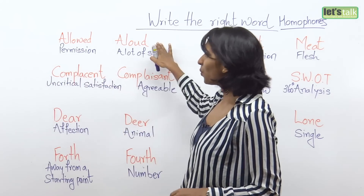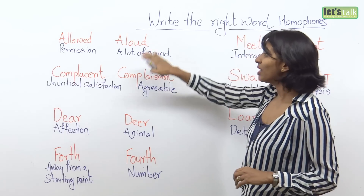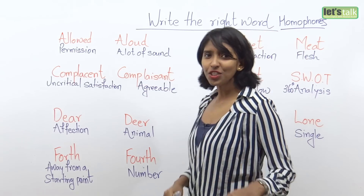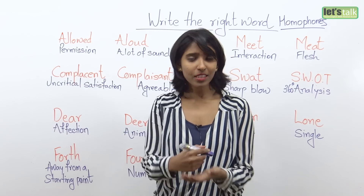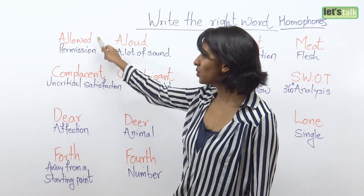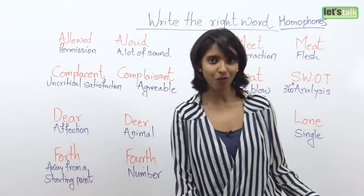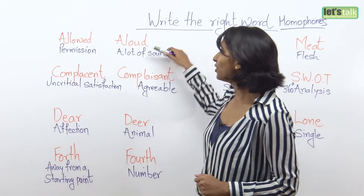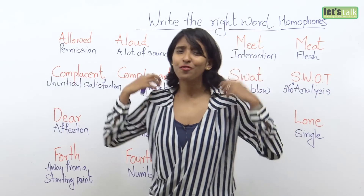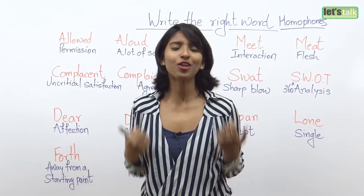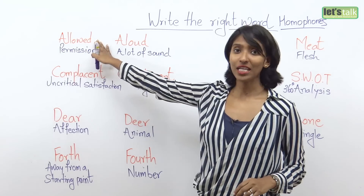But there is another word that sounds very similar. It sounds like 'allowed' but this means a lot of sound. Now imagine if you say John is allowed in the office — if you're using the word meaning permission, John has permission to enter. However, if you use 'aloud,' it means that John makes a lot of noise in the office or he's very vocal. So allowed versus aloud.